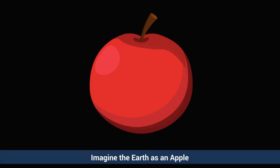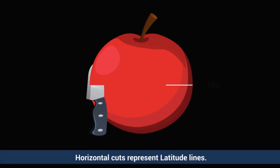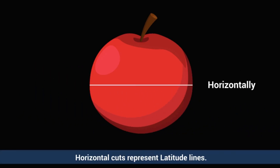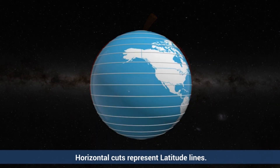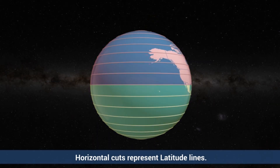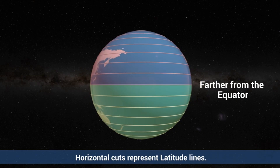Imagine the earth as a round apple. If you slice it horizontally, the biggest slice in the middle represents the equator. This is latitude. The smaller slices above and below represent places farther from the equator.